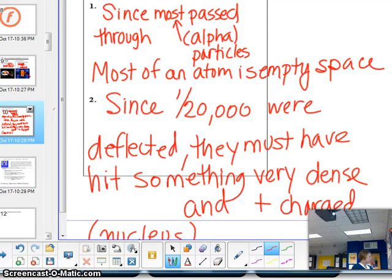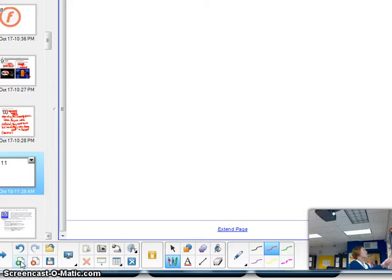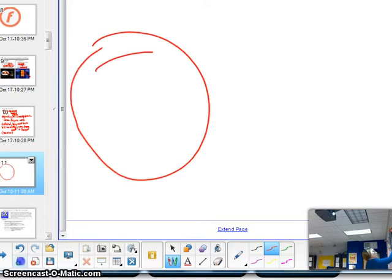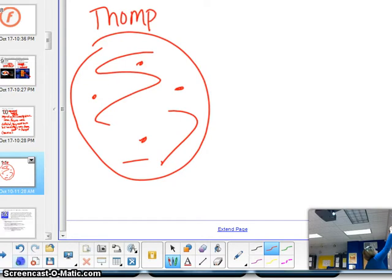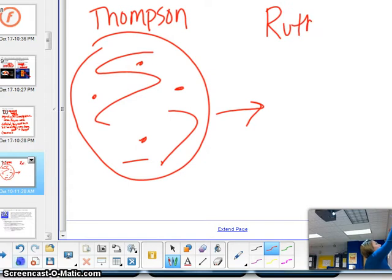So our model of the atom changed after Rutherford's experiment. Instead of it being this chocolate chip cookie model with your positive goop and your negative electrons, that was Thomson's model.